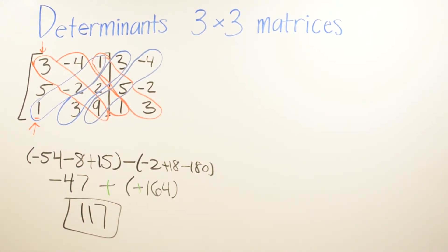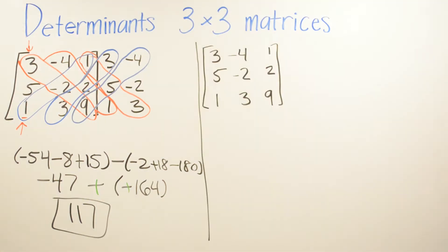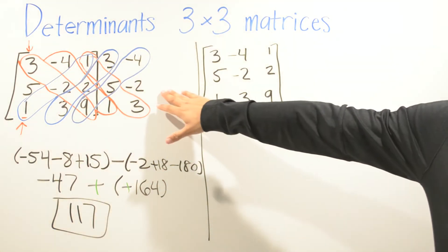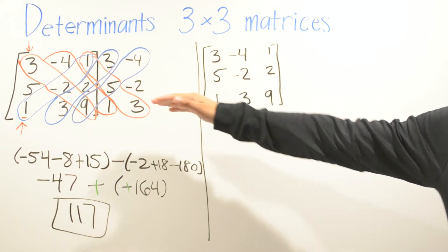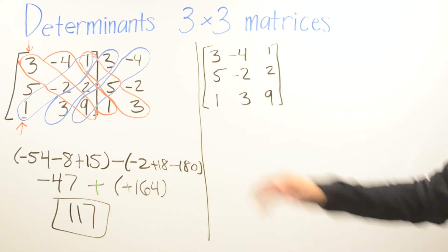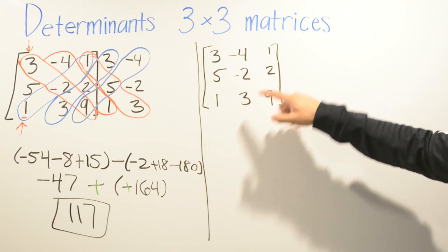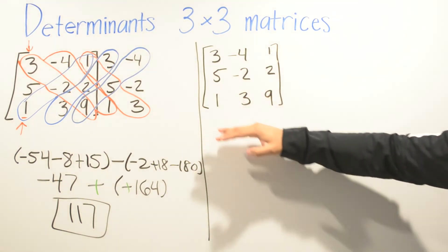I'm going to show you a different way to solve it as well. You can choose either way and you're still going to get the same answer. In the first way, numbers were added on the side of the matrix. In this one, we're going to add the numbers at the bottom of the matrix. So we copy the first two rows and add them at the bottom.